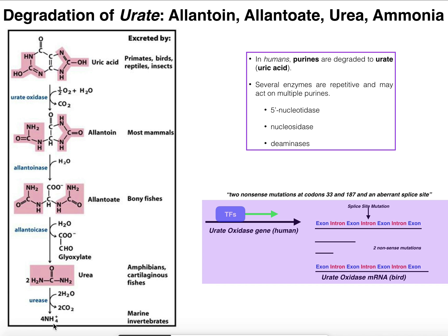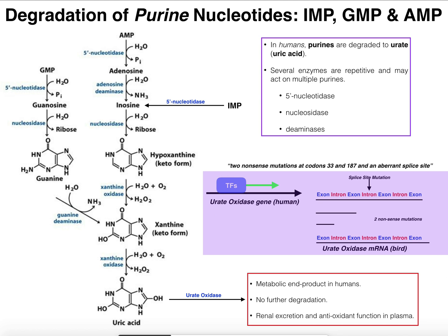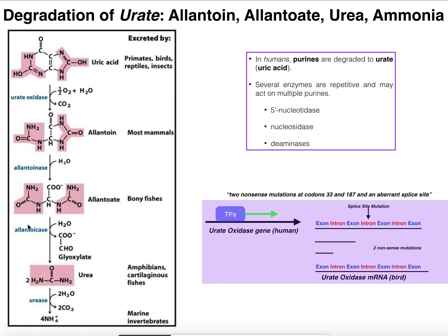That's pretty much all there is to purine catabolism. What's interesting is that it differs from pyrimidine catabolism, where the degradation pathways are more complete — humans can pretty much completely degrade all pyrimidines: U's, T's, and C's. With purines, however, we have a variety of different end products excreted depending on what organism you are, and it really comes down to the arsenal of enzymes that organism possesses. We're eventually going to go into pyrimidine catabolism — join us then.